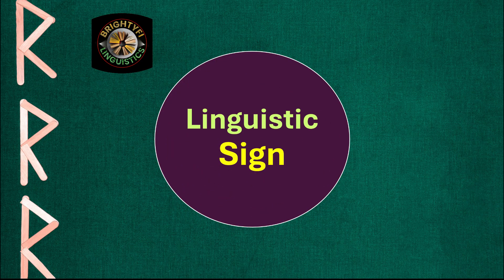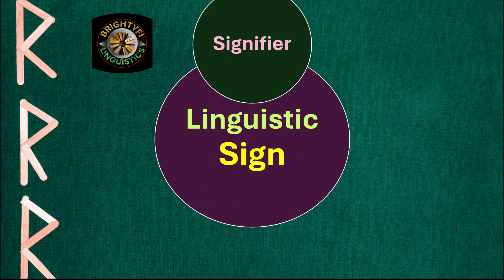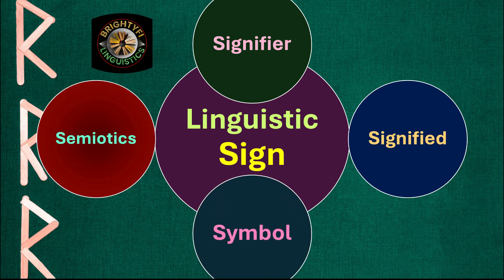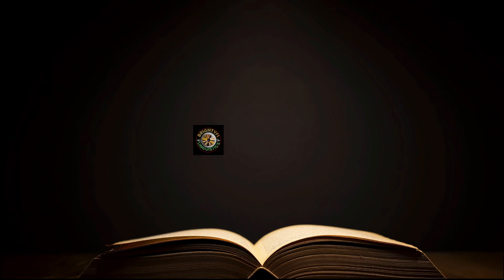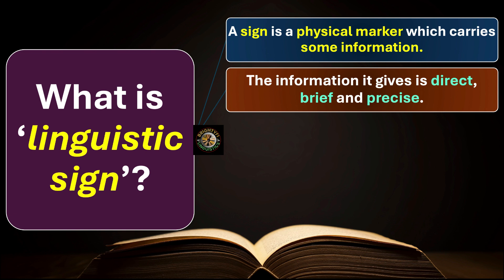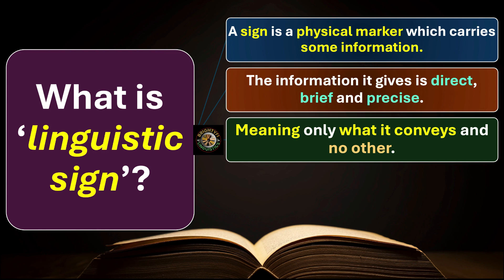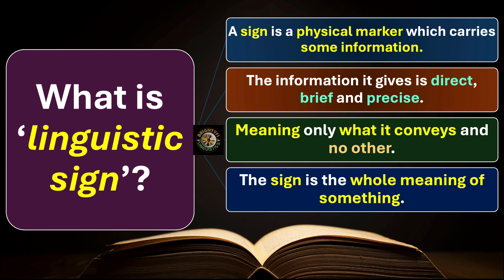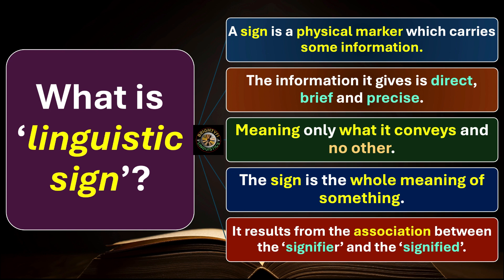Hello and welcome to a new topic: what is a linguistic sign? In this lesson we will talk about signifier, signified, symbol, and semiotics. A sign is a physical marker which carries some information. The information it gives is direct, brief, and precise — meaning only what it conveys and no other. The sign is the whole meaning of something; it results from the association between the signifier and the signified.